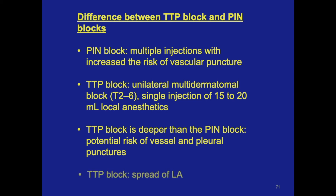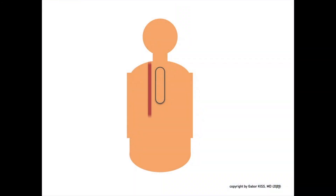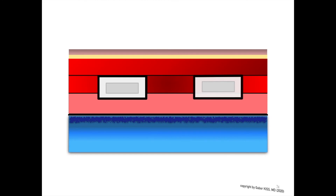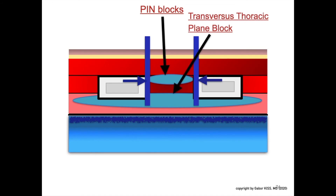There is also a difference in the spread of local anesthesia. Looking again at a sagittal cross-section view at about 2 cm lateral from the sternum to understand the difference in spread between the PIN block and the TTP block: the intercostal nerve is confined in a space between two ribs. In case of a PIN block, local anesthetic spread will most likely be limited to the confined space between the two ribs, while in a transverse thoracic plane block, the spread of local anesthesia will involve several dermatomes.